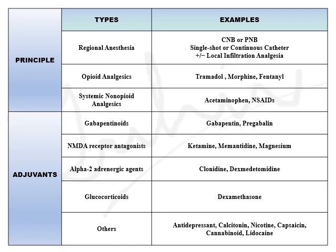The pharmacological components of MMA include regional anesthetics and different techniques. Other components are opioid analgesics like tramadol, morphine, and fentanyl — whatever is available at your setup. Systemic non-opioid analgesics like acetaminophen and NSAIDs. Adjuvants include gabapentinoids such as gabapentin and pregabalin; NMDA receptor antagonists like ketamine, memantine, and magnesium; alpha-2 adrenergic agents like clonidine and dexmedetomidine; glucocorticoids like dexamethasone; and others like antidepressants, calcitonin, nicotine, capsaicin, cannabinoids, and lidocaine.